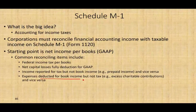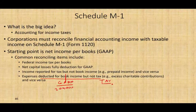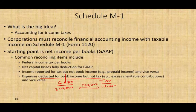Another reconciliation item: expenses deducted for book income but not for tax. For example, if you contributed $200,000 for charitable contributions and deducted the whole thing for GAAP, but for tax purposes you're limited to the 10% limitation and can only take $10,000, there's a $190,000 difference. We're going to work examples to show you how this all works.